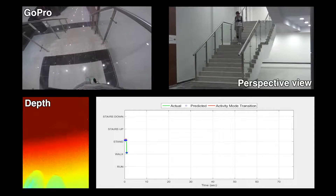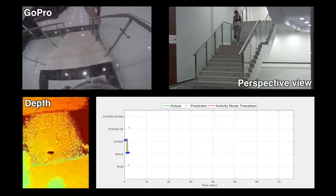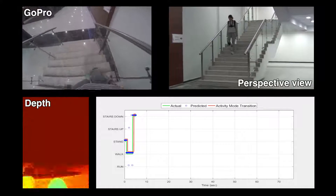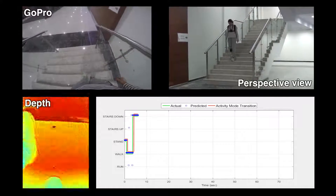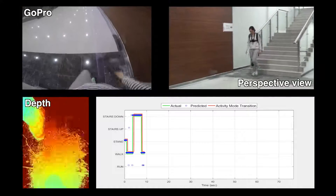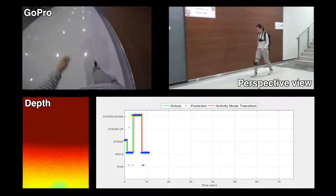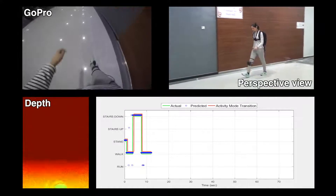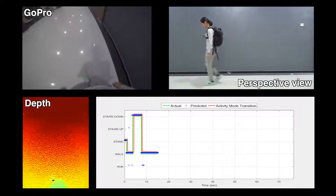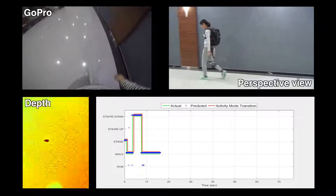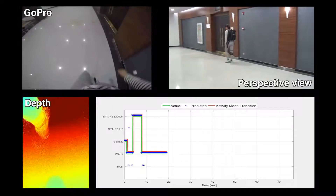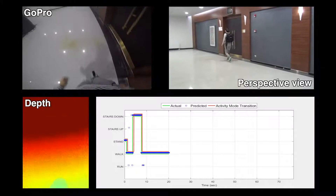We demonstrate the efficiency of our method with an experimental video. In this video, the subject was asked to follow a random tour that includes standing, walking, running, and going up and down the stairs. We used a voting filter for robust activity mode switching.